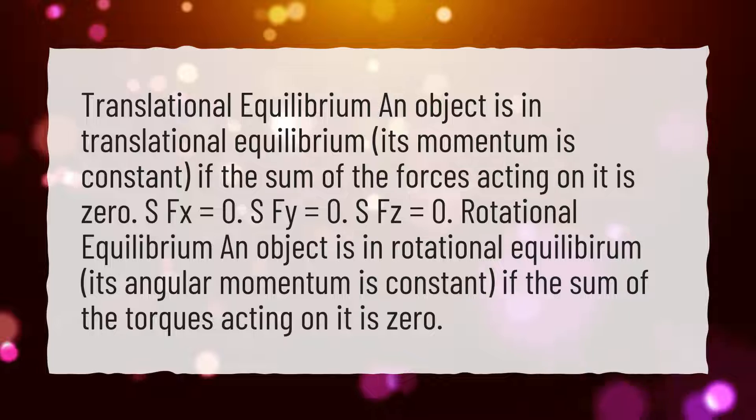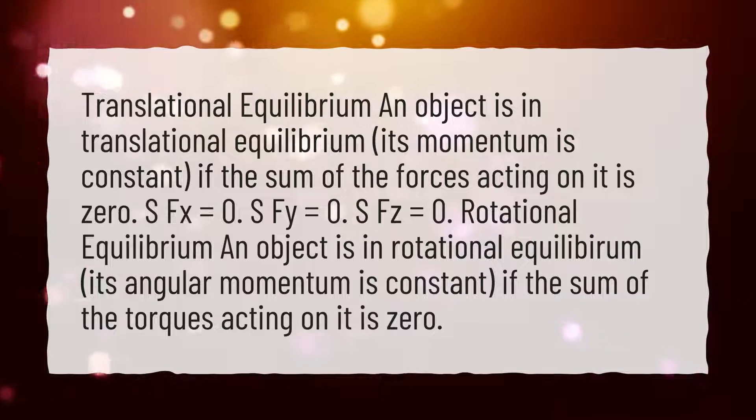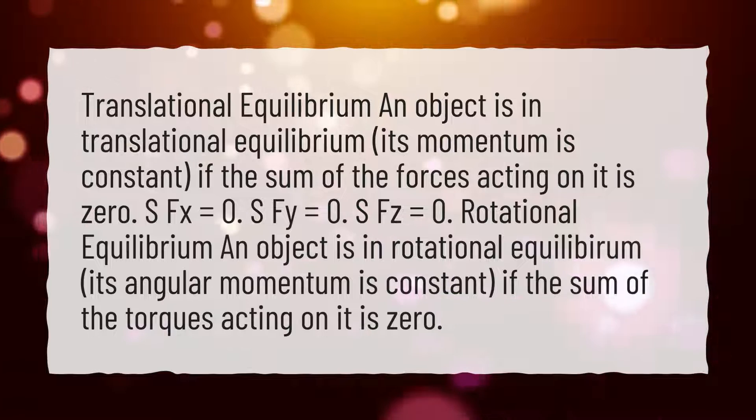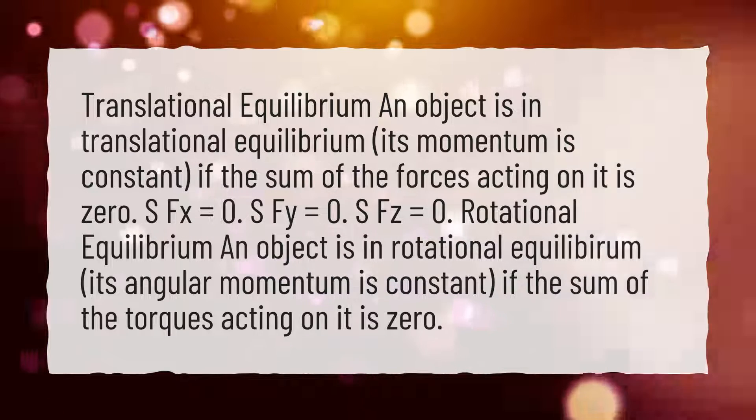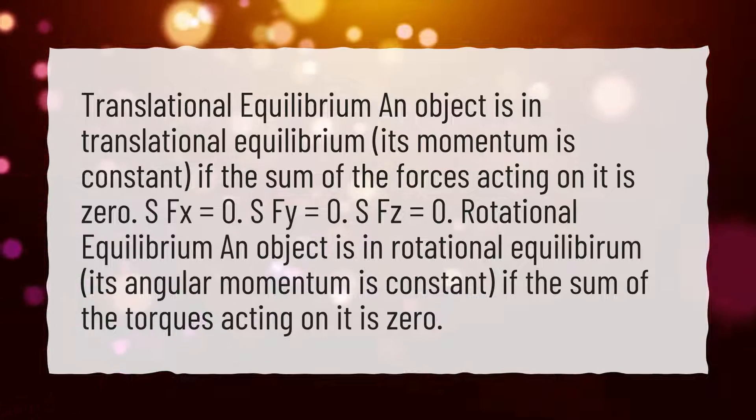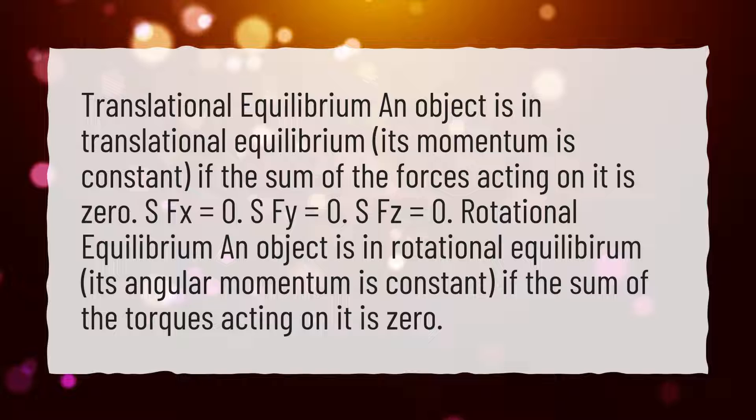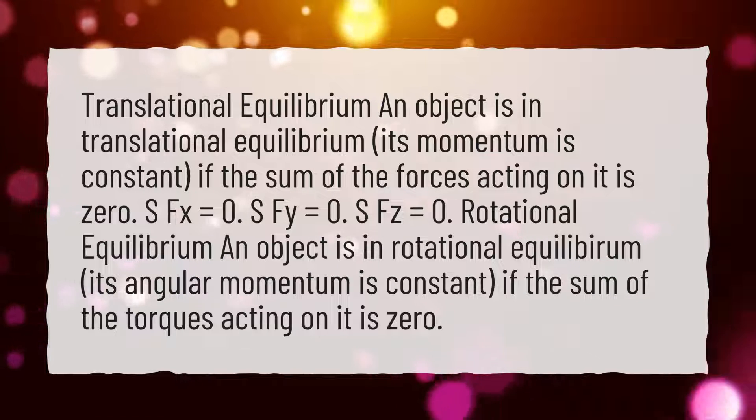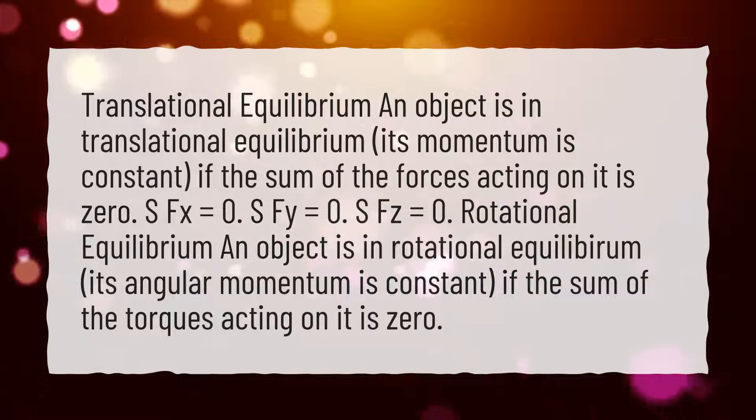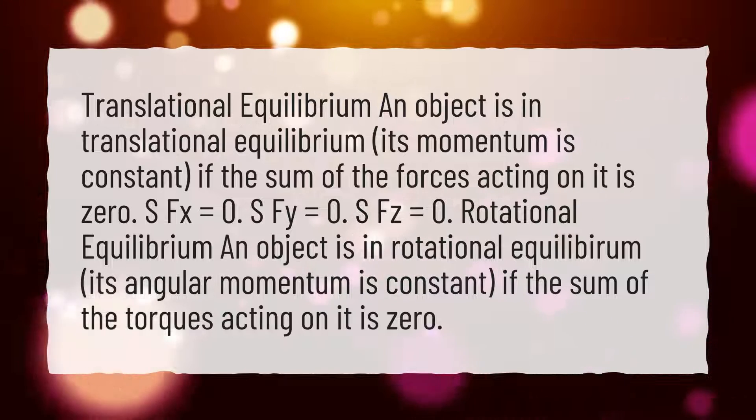Translational Equilibrium: An object is in translational equilibrium, its momentum is constant, if the sum of the forces acting on it is zero. ΣFx = 0, ΣFy = 0, ΣFz = 0. Rotational Equilibrium: An object is in rotational equilibrium, its angular momentum is constant, if the sum of the torques acting on it is zero.